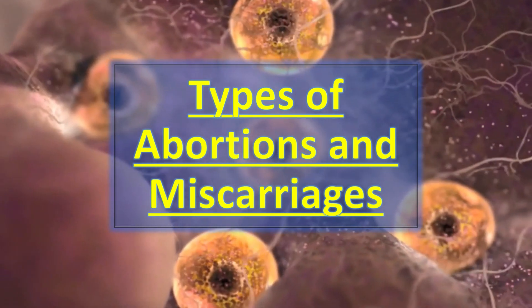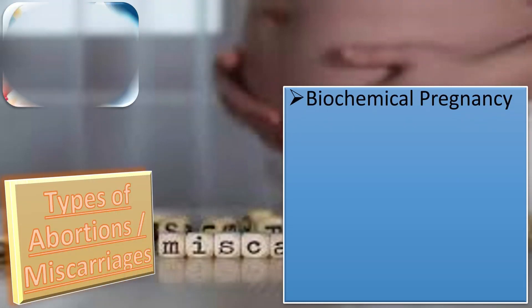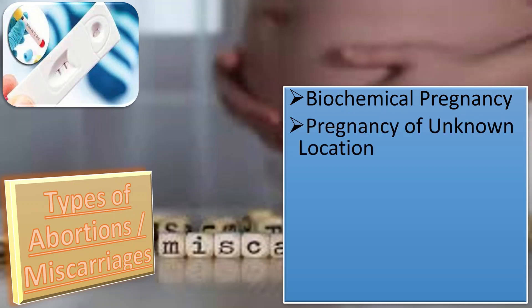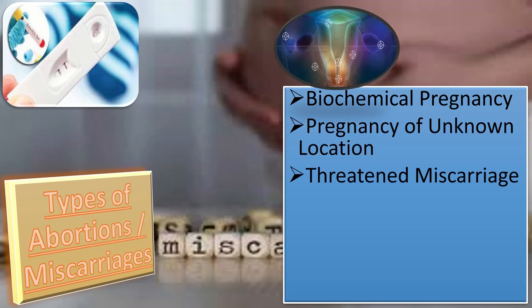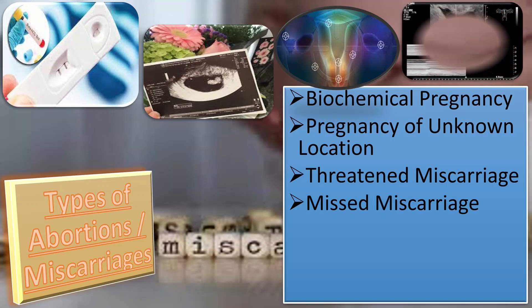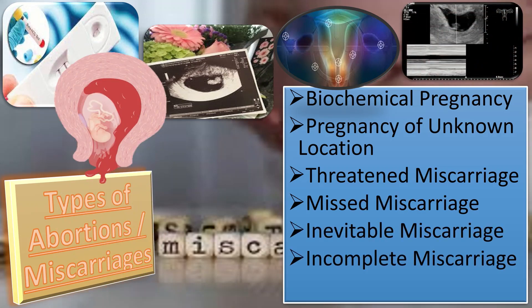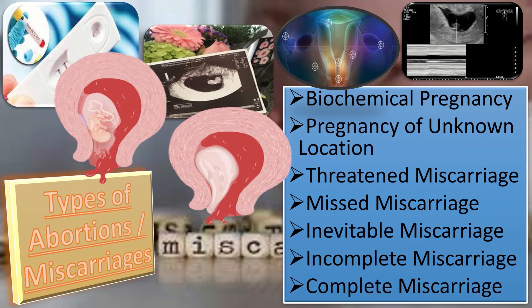So what are the different types of abortion and miscarriages? Basically, we have seven main types: first is biochemical pregnancy; second, pregnancy of unknown location; third, threatened miscarriage; then missed miscarriage; then inevitable miscarriage; incomplete miscarriage; and finally, complete miscarriage.